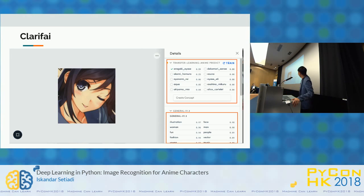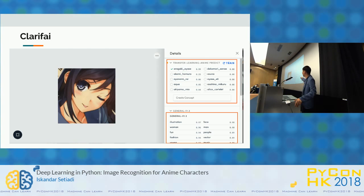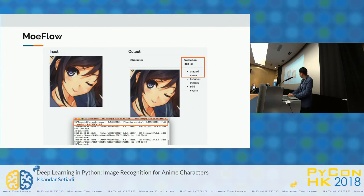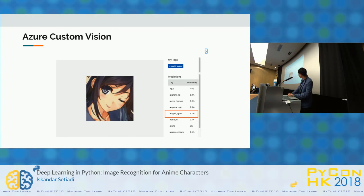This is how the Clarify UI looks — when you upload an image, it shows the label you gave and also gives general descriptive tags like 'illustration,' 'face,' 'woman,' which is very useful. From Google Cloud AutoML, since it's still in beta, the UI is less sophisticated — it only shows the label. And this is how my own website looks. Azure Custom Vision showed a wrong prediction — I don't understand.